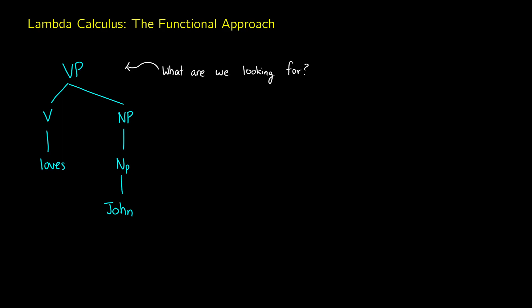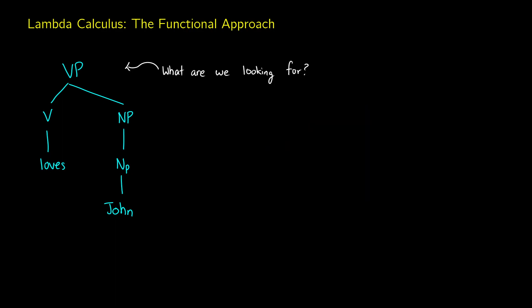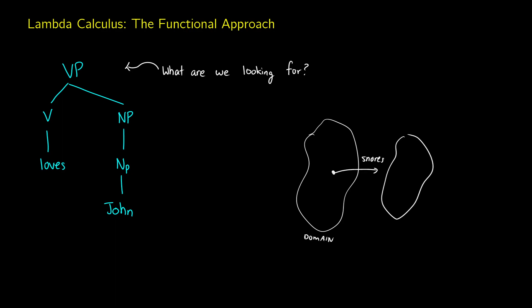With model theory, we're basically saying that in a set where something happens, do we have a member that's in that set for that sentence to be true? In the functional approach, what we're doing is a little bit different. We're considering a bunch of individuals in our domain, and we're going to ask a question about an intransitive verb — something like, who snores? And it's going to send it off to either something being true or false.